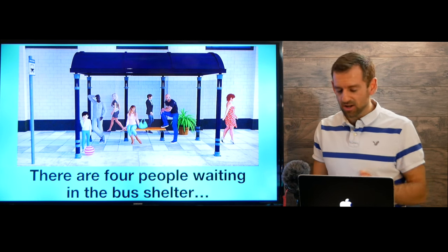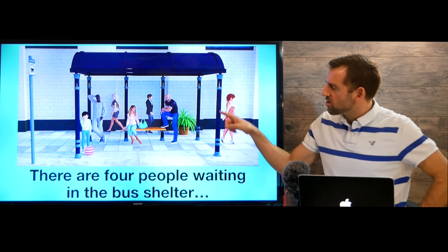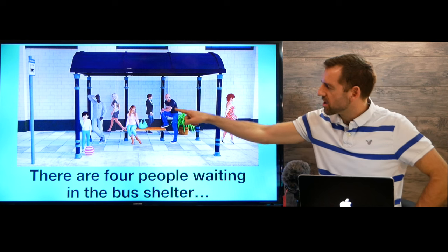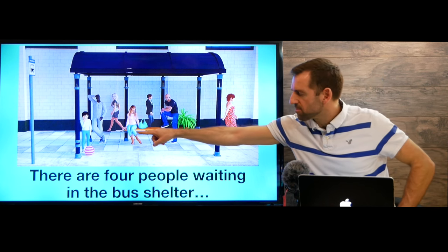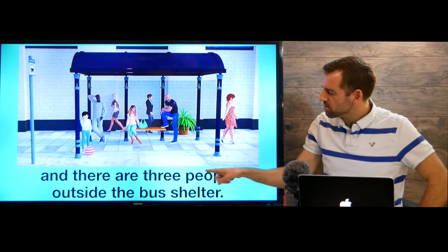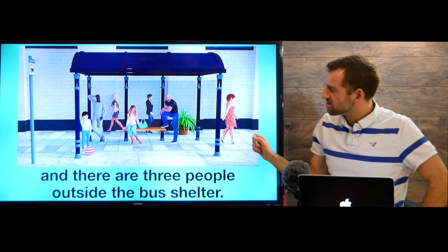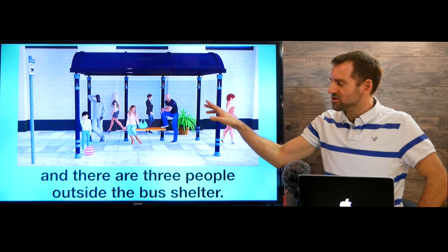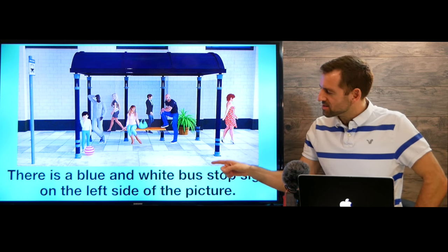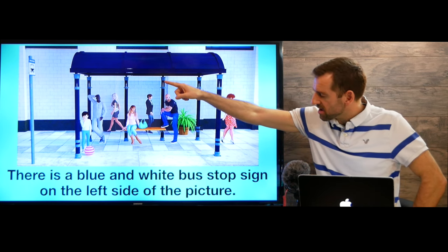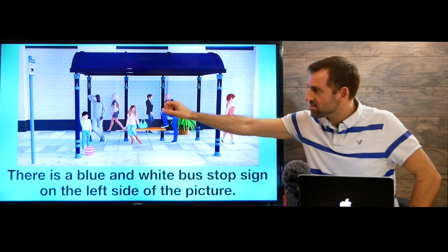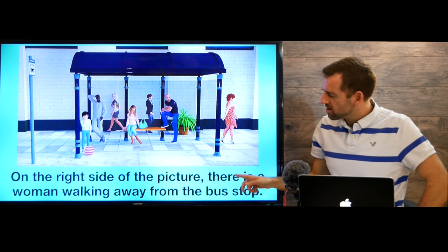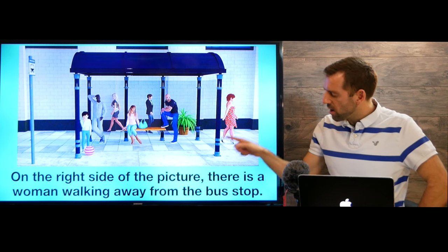Now what? Well, there are four people waiting in the bus shelter. We could describe this as a bus shelter — one, two, three, four. And there are three people outside the bus shelter: this woman, this guy, and that woman. What else is in the picture? Well, there is a blue and white bus stop sign on the left side of the picture. And on the right side of the picture, there is a woman walking away from the bus stop.